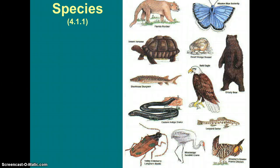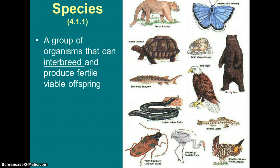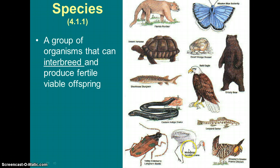Before we get going, we have to understand what a species is. A species refers to a group of organisms that can interbreed and produce fertile, viable offspring. For instance, the butterfly and the bald eagle are not the same species — they can't interbreed and have very different characteristics. And even though the bald eagle and the Mississippi crane are very similar in that they're both birds with wings, beaks, and taloned feet, they are not the same species because they cannot interbreed.